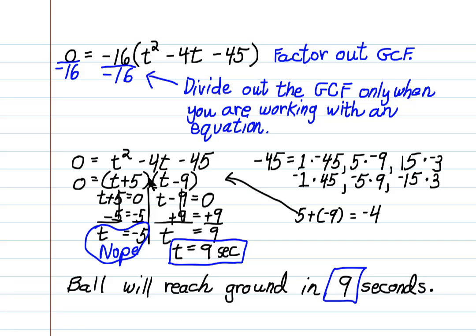So, I make two sets of parentheses. I put a t here and a t here. And then because 5 is positive 5, I put a plus 5 here. And because 9 is negative 9, I put a minus and a 9 here. And now I have the two binomial factors of t squared minus 4t minus 45.